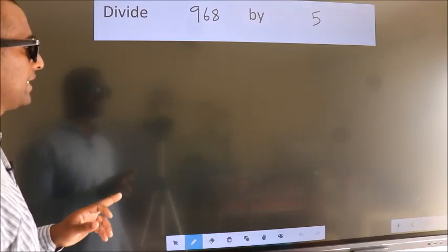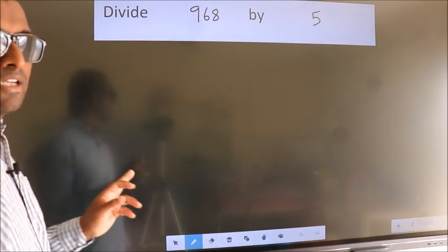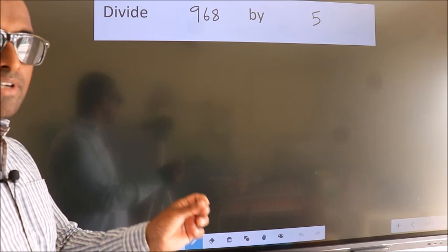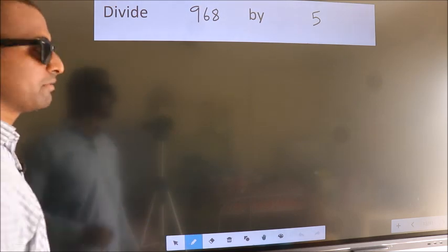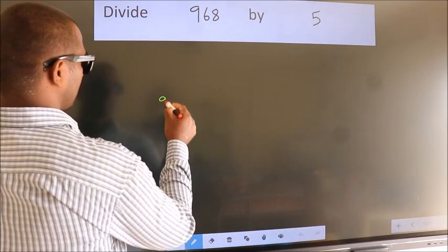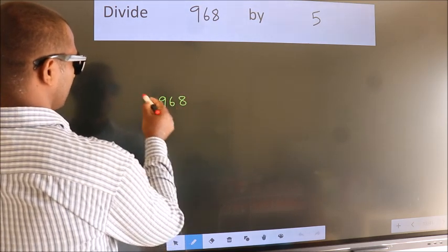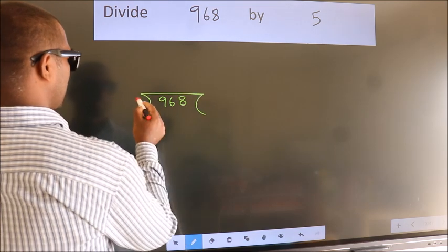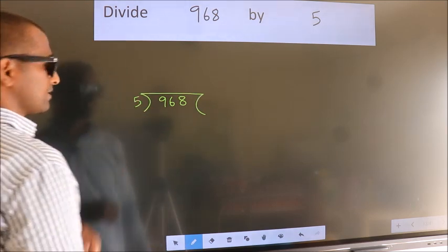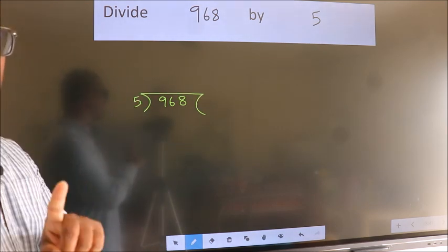Divide 968 by 5. To do this division, we should frame it in this way. 968 here, 5 here. This is your step 1.